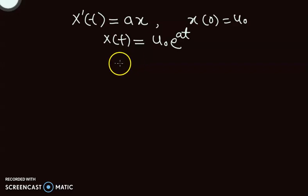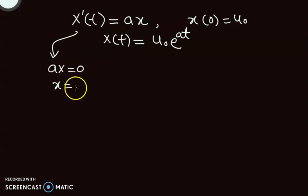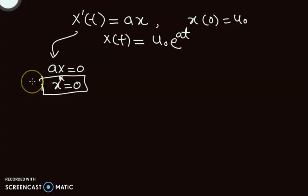We also saw that the equilibrium point of this differential equation was found by setting x' equal to 0, and that was x* = 0. This was the equilibrium solution or equilibrium point. So we will now see whether this equilibrium solution is a sink or source by the help of graphical interpretation.